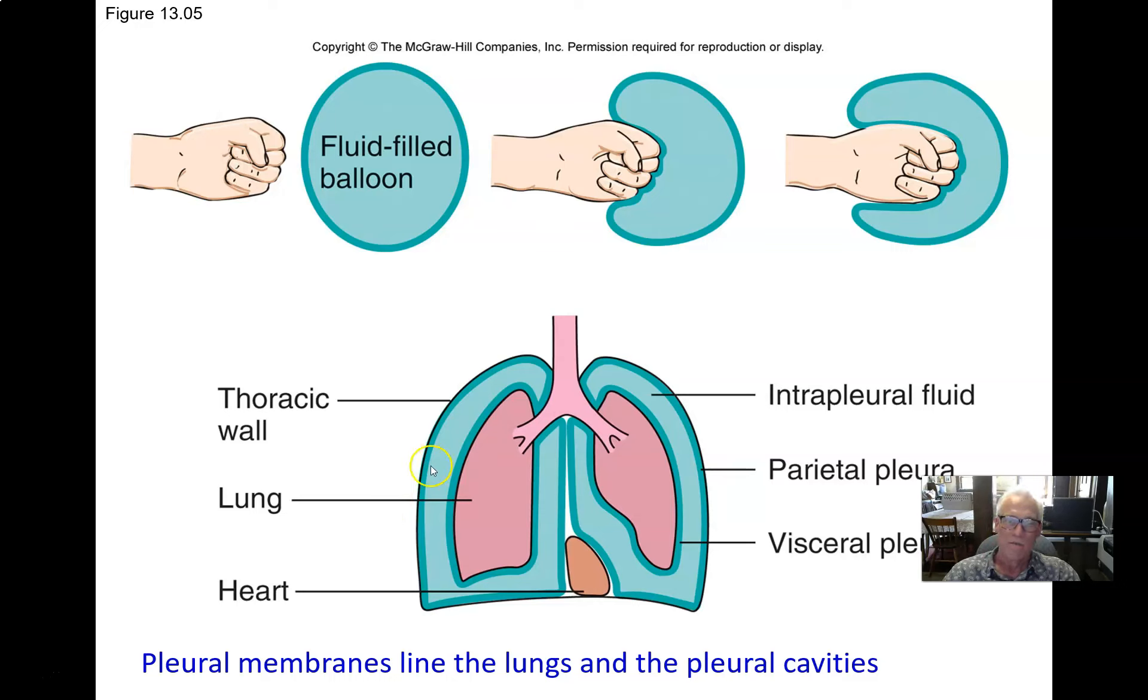The parietal pleura is one epithelial layer. Then the lungs themselves are lined with an identical serous membrane called the visceral pleura. Those two membranes are directly opposed to each other. There's a little bit of lubricant fluid in between them, allowing the lungs to glide effortlessly against the chest wall as they expand and contract. Those are the pleural membranes.